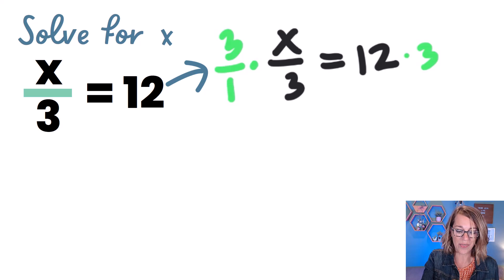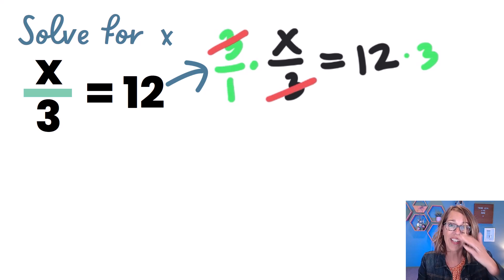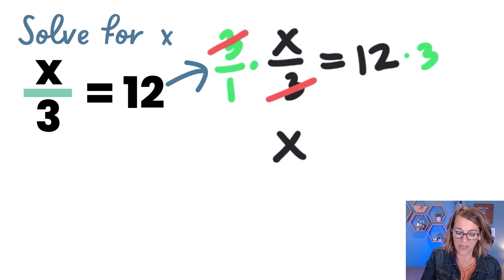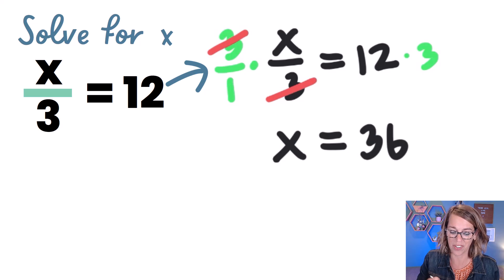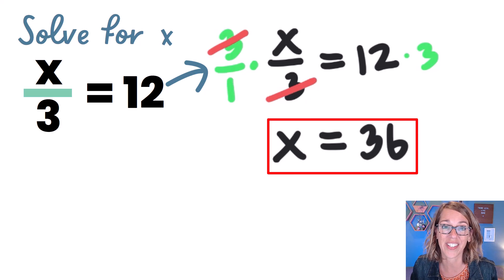I can cancel the 3 in the numerator and denominator, and I get just an x over 1. Well, x over 1 is x, so we've got x by itself. And 12 times 3 is equal to 36. And we've got our solution of 36.